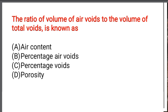Next question: The ratio of volume of air voids to the volume of total voids is known as — Option A: Air content. Option B: Percentage of air voids. Option C: Percentage of voids. Option D: Porosity. The correct answer is Option A: Air content.